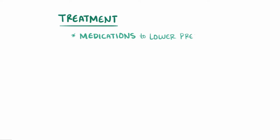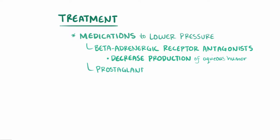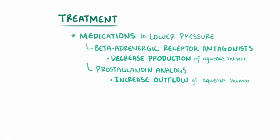Even though glaucoma is not curable, it can be slowed with treatment. If the underlying issue is intraocular hypertension, it can be managed by medications that decrease the pressure in the eye — for example, beta-adrenergic receptor antagonists, which decrease the production of aqueous humor and therefore lower the pressure. There are also prostaglandin analogs, which increase the flow of aqueous humor and also tend to lower the pressure, both through the main trabecular drainage pathway as well as an alternative one called the uveal scleral pathway.